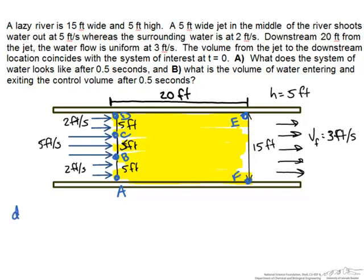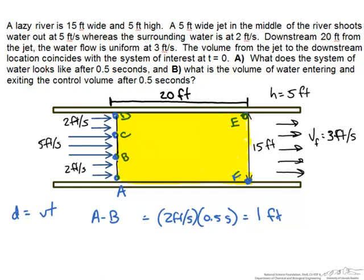We want to calculate the distance that particular part of the system has moved. We could just take the velocity times the time for each of these areas. For section AB, assuming uniform flow, we have 2 feet per second times 0.5 seconds. That part of the water has moved 1 foot. We're going to assume the water does not mix, even though we know it would.